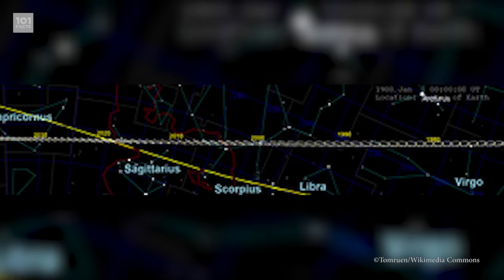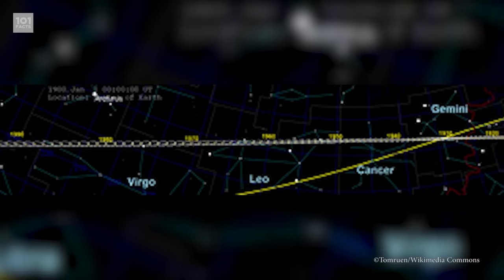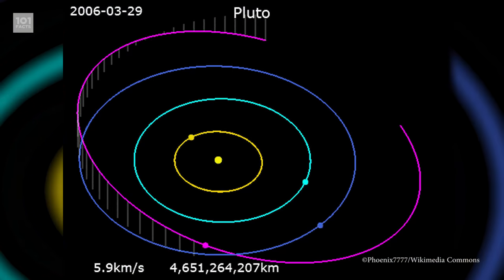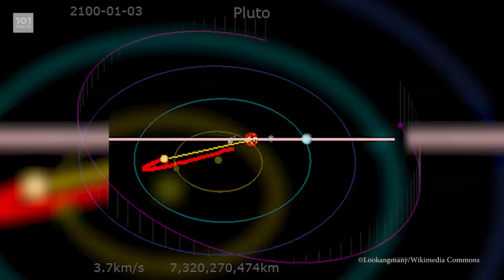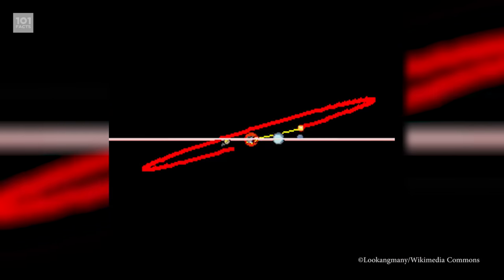Pluto has an elliptical orbit, which means that it can sometimes be closer to the sun than Neptune is. As well as this, Pluto's orbit is actually tilted quite significantly when compared to other planets.